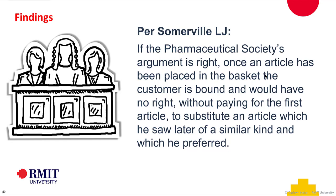The contract is made at the point of time when you take the goods to the register. So who is actually the offeror at the register and who is the offeree? The person who wants to buy the product is making an offer - the offer is usually made at the price stipulated on the item or on the shelf. Now there is an overlay under the Australian Consumer Law: if there is a difference between the price at the register and the price on the shelf, the lowest price needs to apply. But technically you are making an offer to purchase the goods at their advertised price, and that offer is accepted at the point of payment.